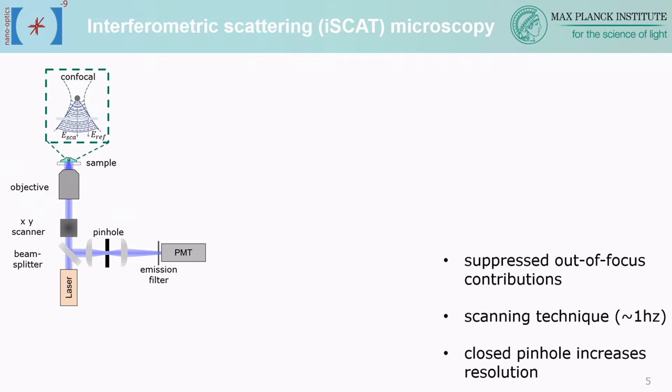It's also possible to suppress out-of-focus contributions. What we've done is introduce a pinhole, using a confocal microscope to perform iSCAT. This is a scanning technique, which slows things down — a frame takes about a second — but on the other hand we can afford to close the pinhole, which increases resolution. In fluorescence microscopy you typically keep the pinhole at 1.2 Airy units because you can't afford to lose signal, whereas in iSCAT we're detecting scattering and not signal-limited, so we can increase illumination intensity and close the pinhole to gain extra resolution.